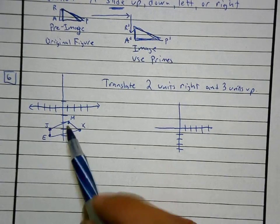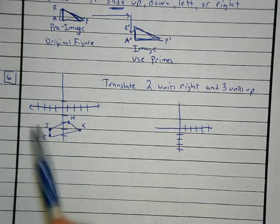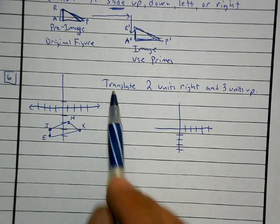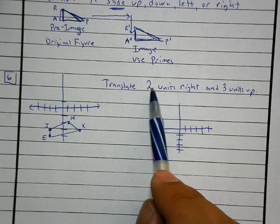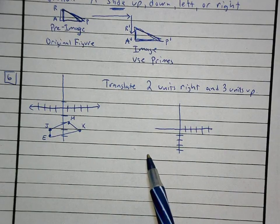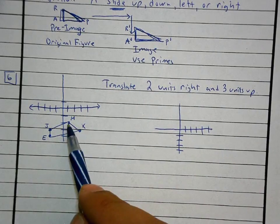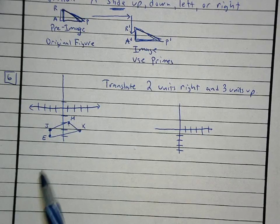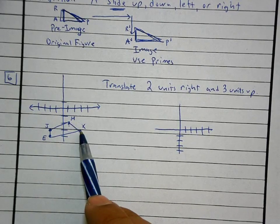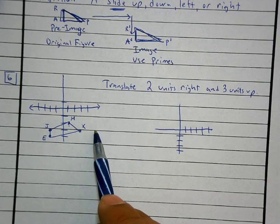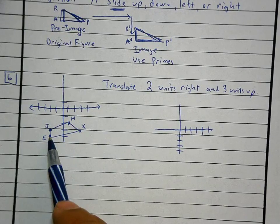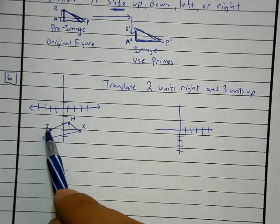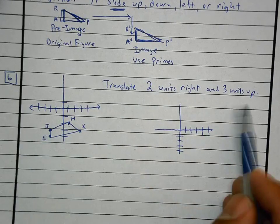This means that we're going to be taking this object and translating every single point two units to the right and three units up. That means I take the letter M and move it to the right two and up three. I take the X and move it to the right two and up three. I take the E and move it right two and up three. I take the J and move it right two and up three.